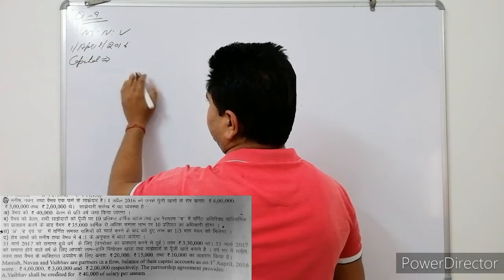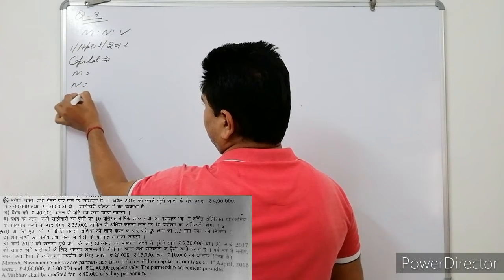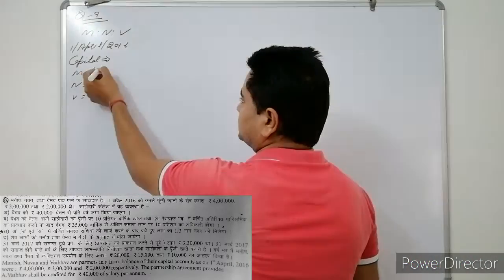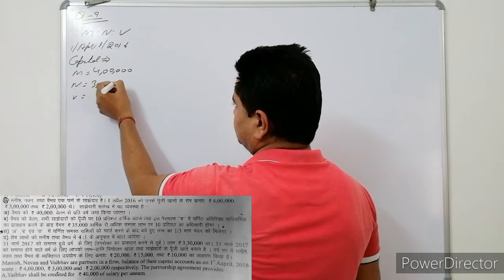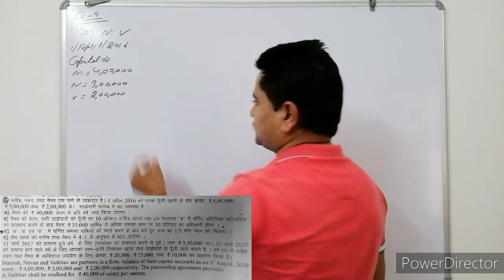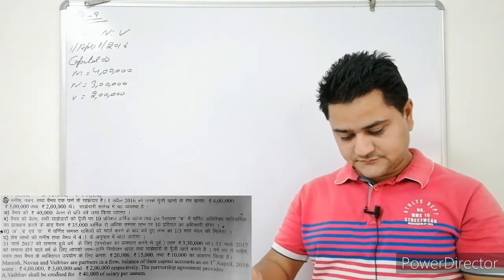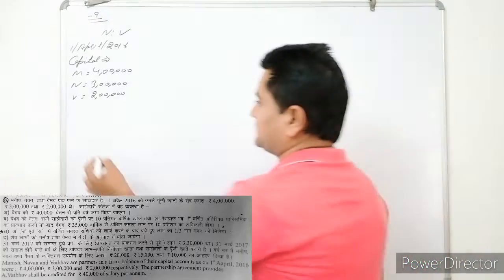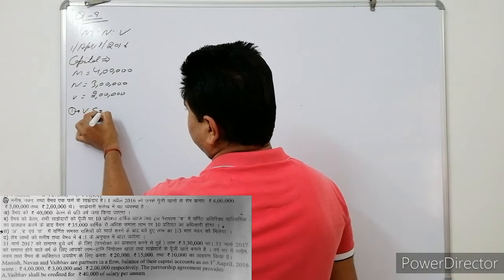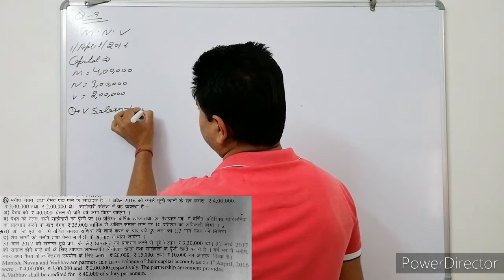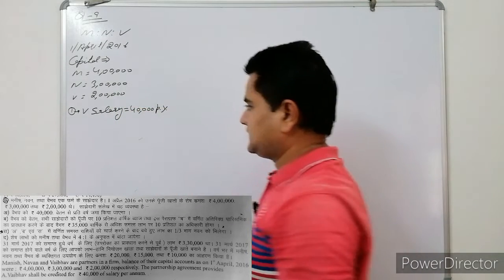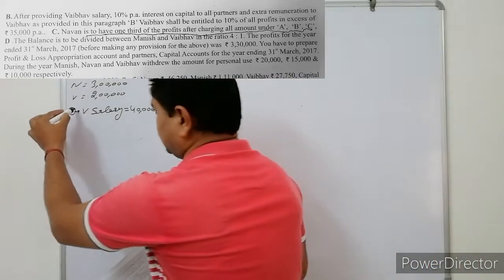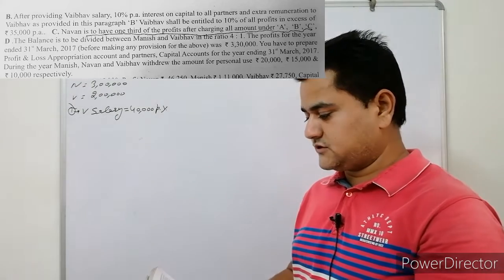The capital balance of Manish, Navan and Weibo is given. The first condition is that Weibo shall be credited a salary of Rs.40,000 per annum. After providing salary, we have 10% interest on capital to all partners.